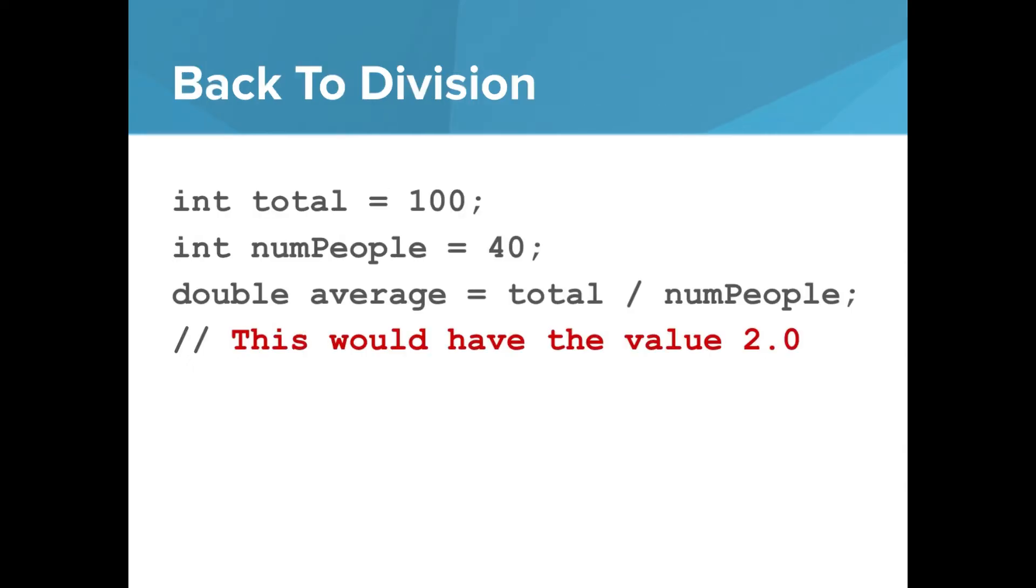So let's go back to division. Remember, here we have total equal to 100, int numPeople equal to 40, and now if we say double average equals total divided by numPeople, this would have the value 2, which is not what we would want, and it has that because of integer division.